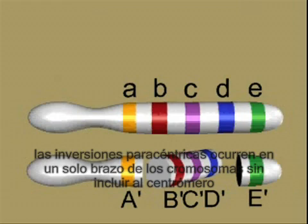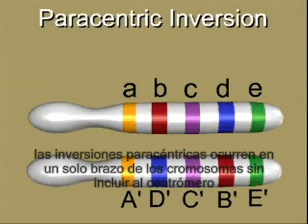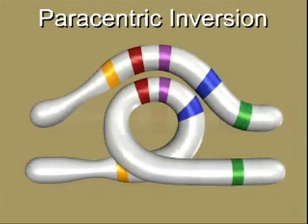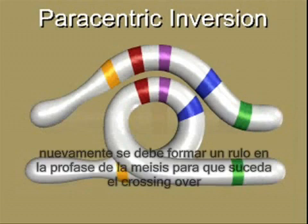Paracentric inversions occur along one arm of a chromosome and do not include the centromere region. The region containing genes B through D has been inverted. A loop forms to allow alignment of the homologous regions during meiosis.